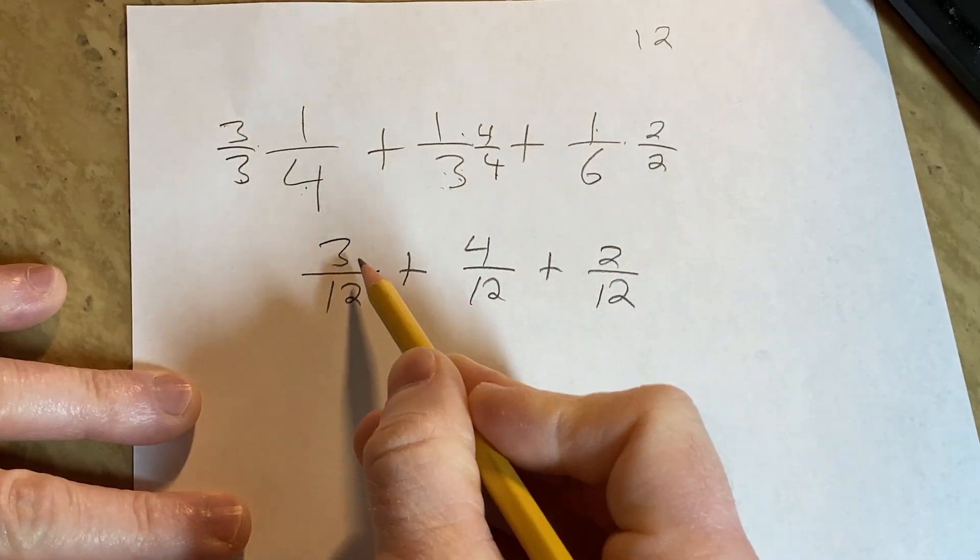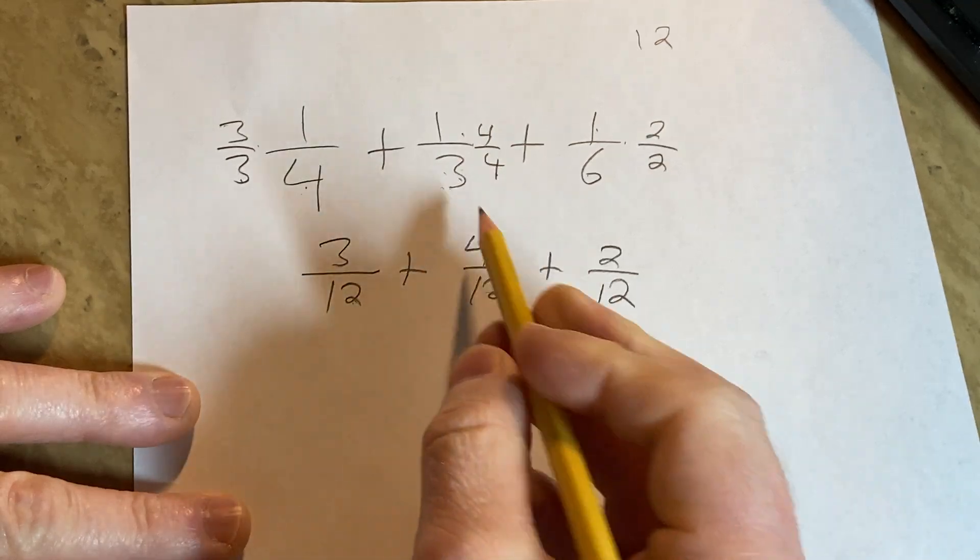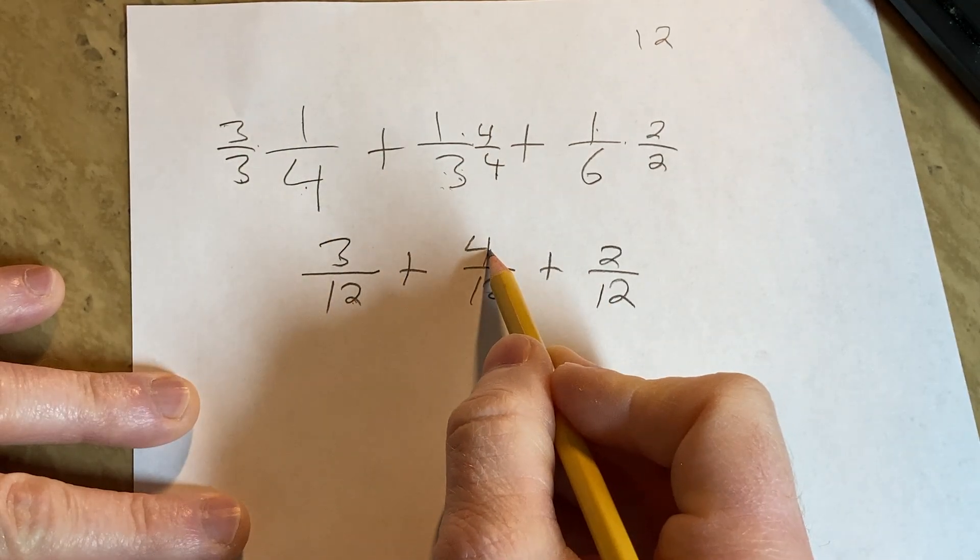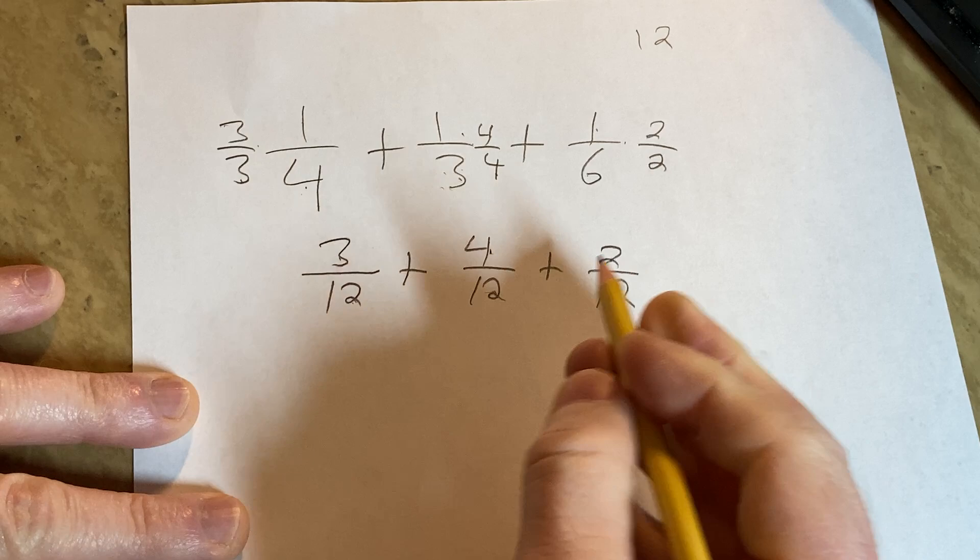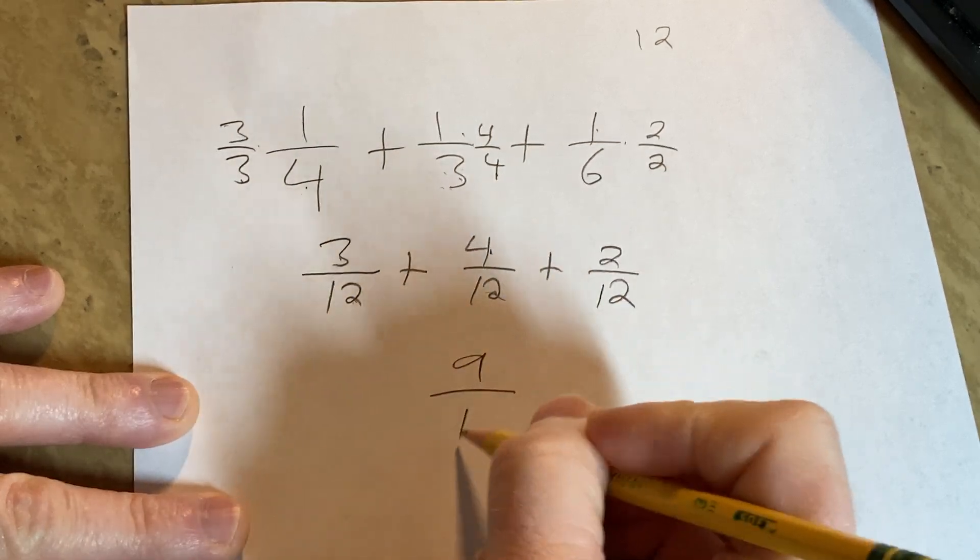Now you can add straight across the numerators because you have a common denominator. 3 plus 4 is 7, plus 2 is 9, so this is 9 over 12.